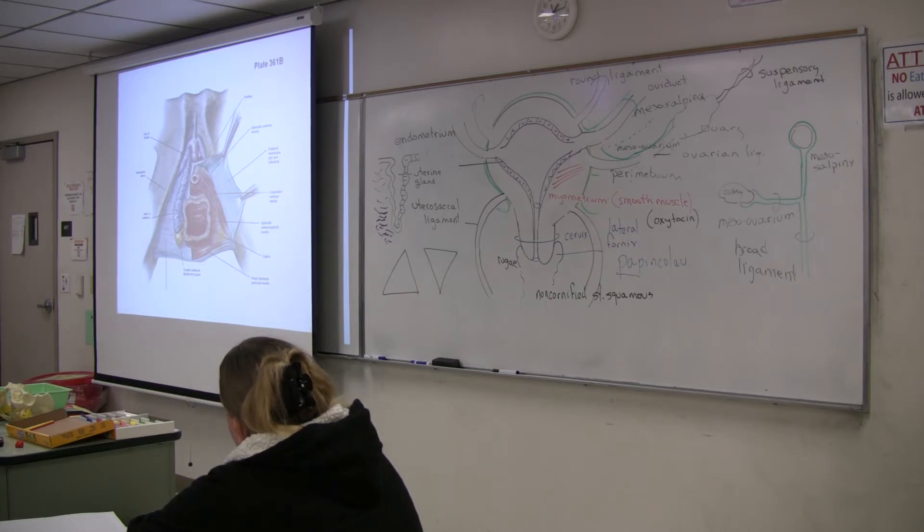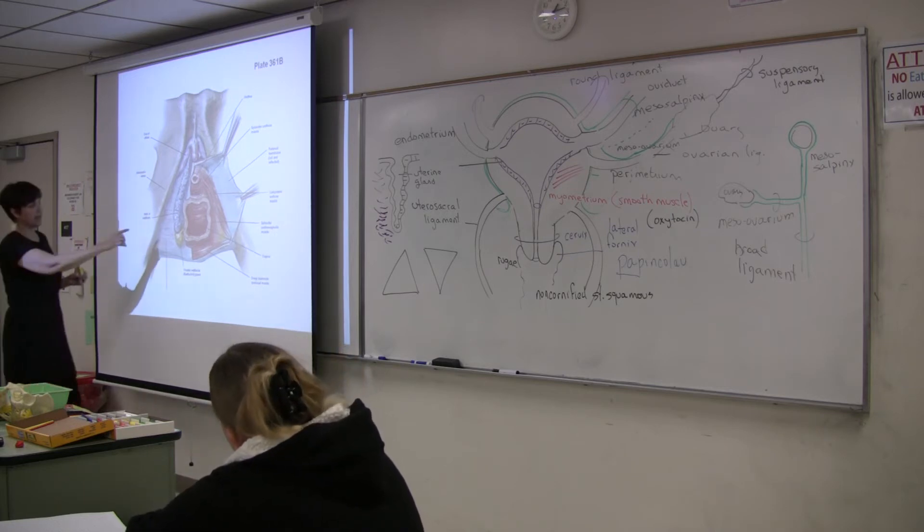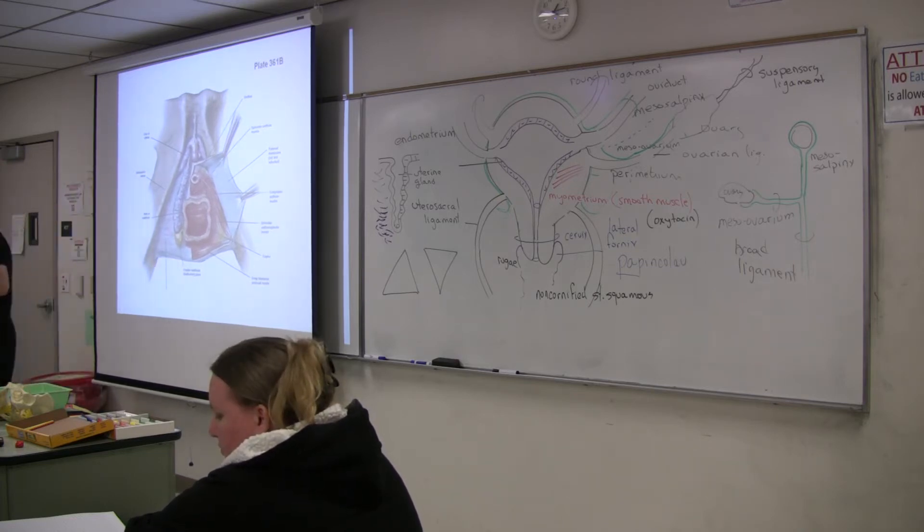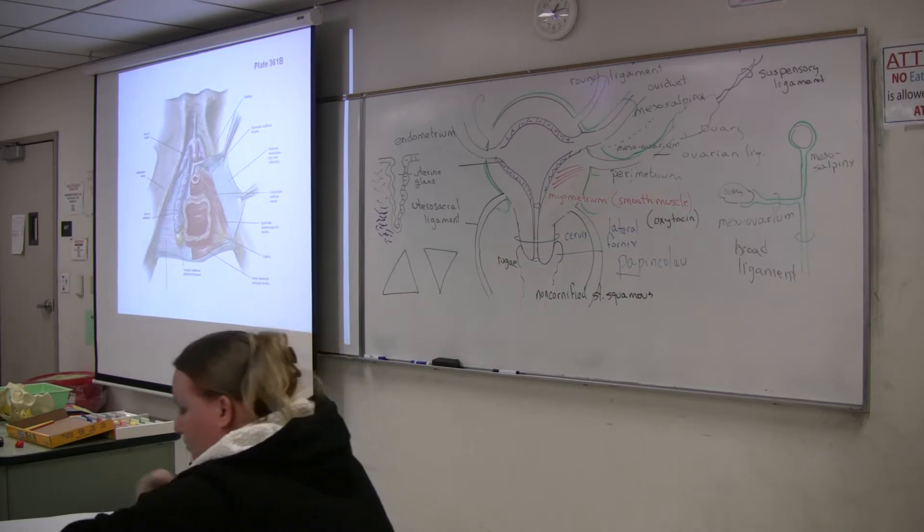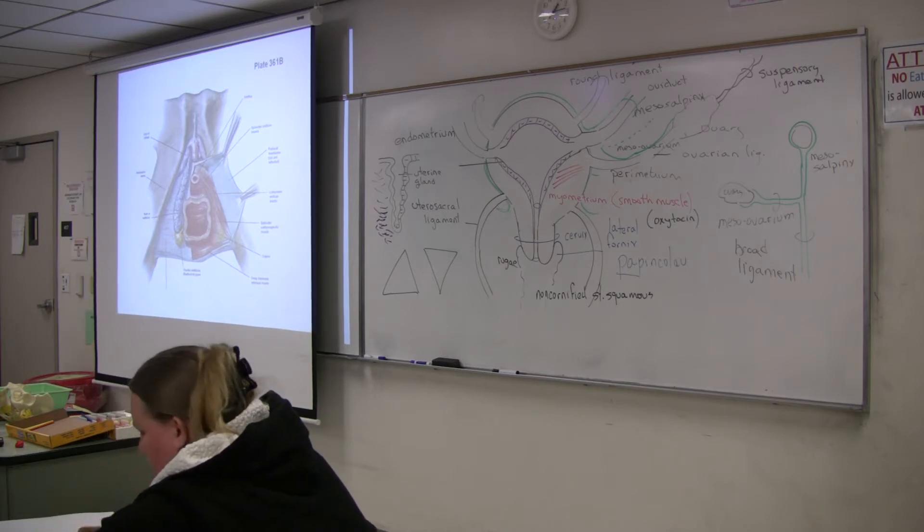Now remember Cowper's glands, bulbourethral glands in the male? Function to flush out the urethra and change the pH so it's not as acidic. At the posterior aspect of the bulb, we have the bulbourethral gland of the female. They're going to lubricate the vestibule and the lower inch or inch and a half of the vagina. That would be this kind of round spot back here.